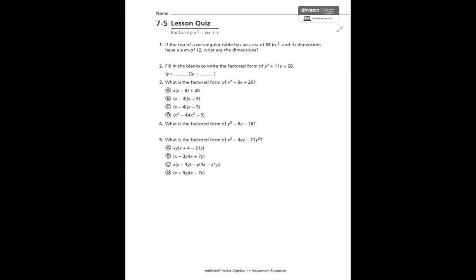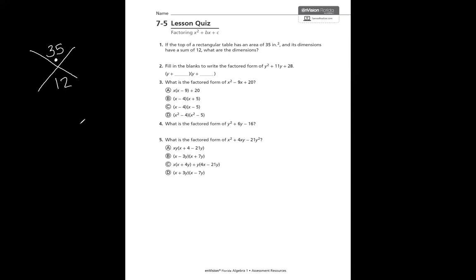Let's look at number 1. It says, if the top of a rectangular table has an area of 35 inches squared and its dimensions have a sum of 12, what are the dimensions? Your teacher may have had you draw an X, with a number on top and a number on the bottom. You had to decide what two numbers multiplied to give you the top number and added together to give you the bottom number. The area is 35 — we put that on top because length times width multiplied to give you 35. Sum means add, so we put 12 on the bottom.